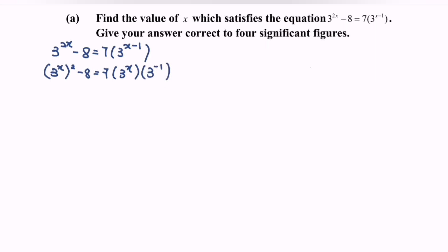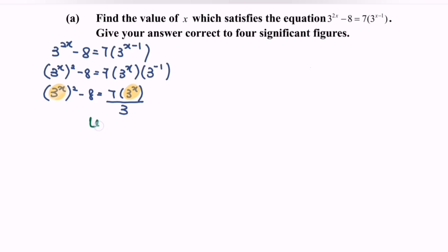So rewriting the situation: 3 to the power of x squared minus 8 equals 7 multiplied by 3 to the power of x. As we know, 3 to the power of negative 1 equals 1 over 3. Notice that we have a common term, which is 3 to the power of x. So let y equal 3 to the power of x. We will then have y squared minus 8 equals 7y over 3.